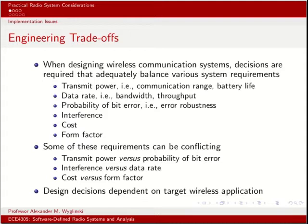Some very popular requirements that we usually need to consider when performing a cost-benefit and trade-off analysis are things like transmit power, data rate, probability of error, interference, cost, and form factor. However, as is often the case, we sometimes have conflicting requirements.